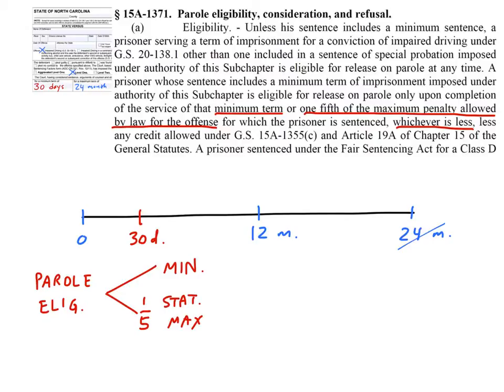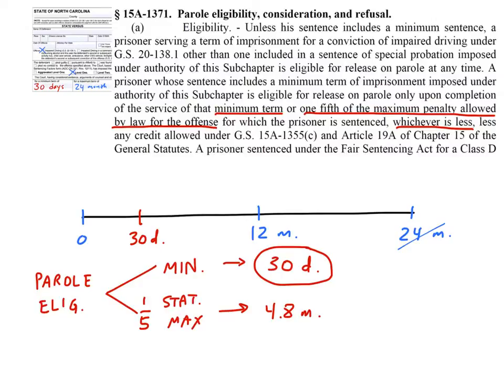In our case, the minimum was 30 days and the statutory maximum for a Level 1 DWI is 24 months. One-fifth of that is 4.8 months. Whichever is less — in this case it's 30 days — means the inmate would be eligible for parole after 30 days. Unfortunately, from the inmate's point of view, in addition to those chronological requirements, there are other criteria the inmate has to meet before being paroled.